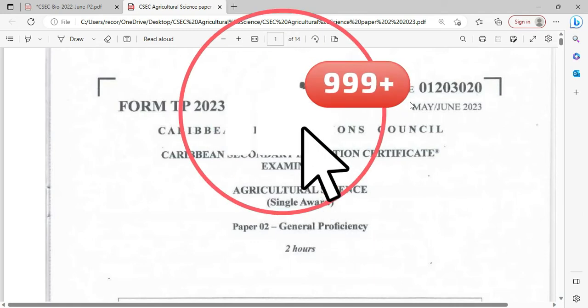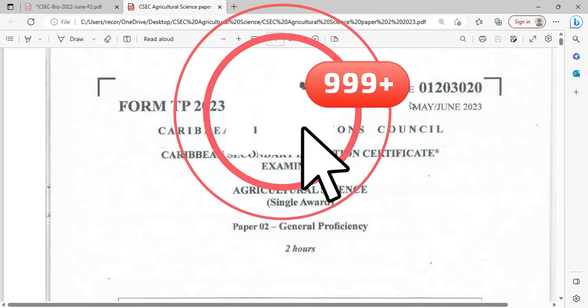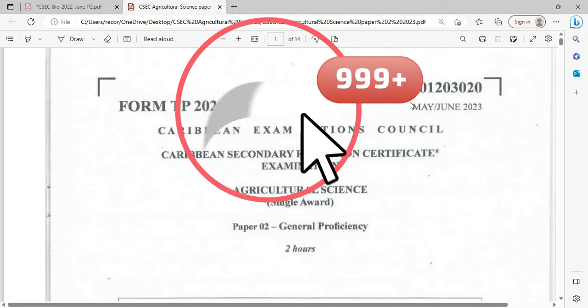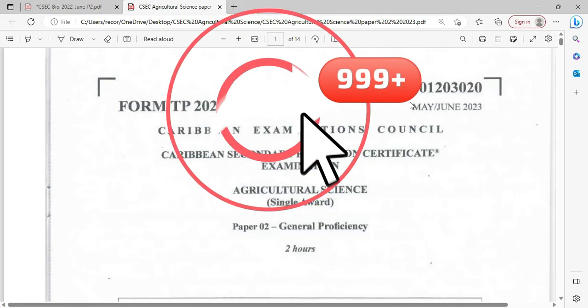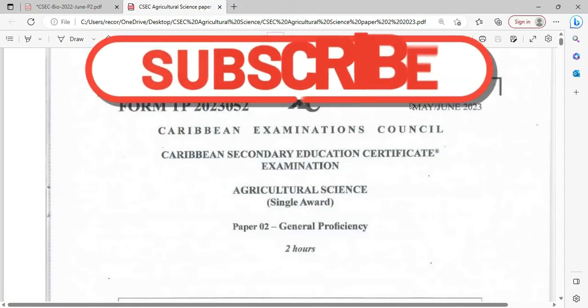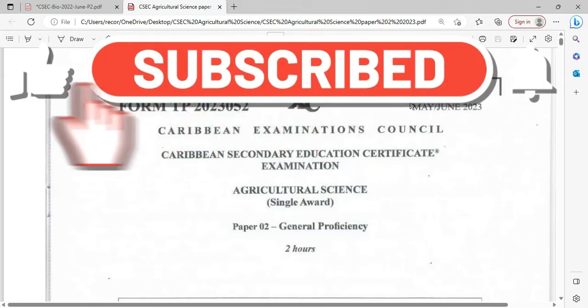Welcome to CSEC Biology TCP. I'm Mr. Wilson from the TCP Academy. Today we're going to be looking at the May/June 2023 Agricultural Science Single Award question number four. There are other questions I would have answered from this paper.